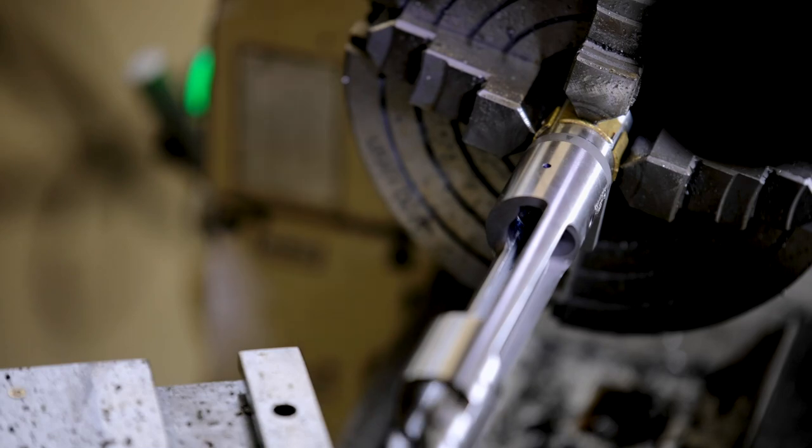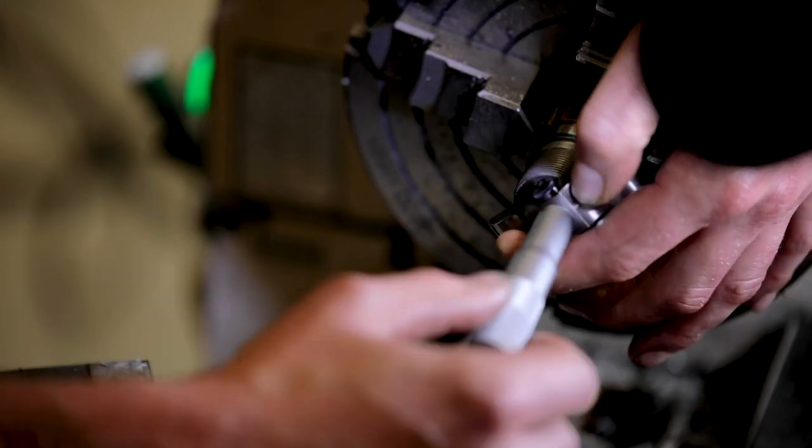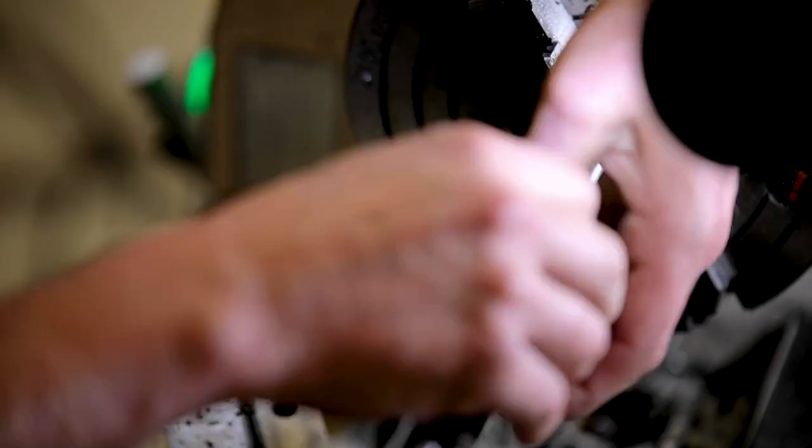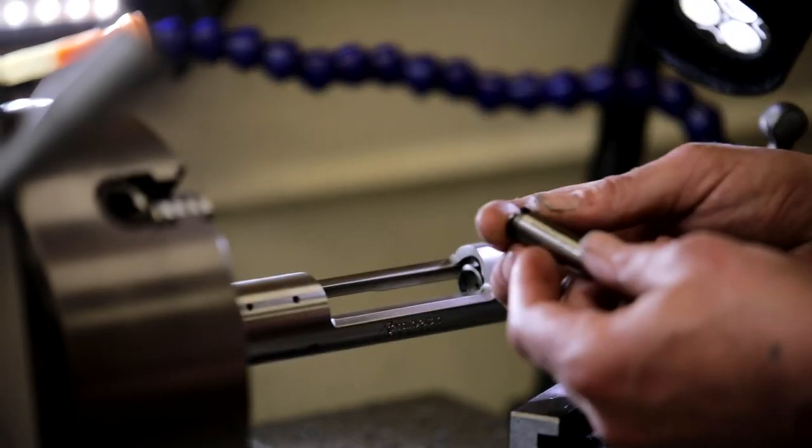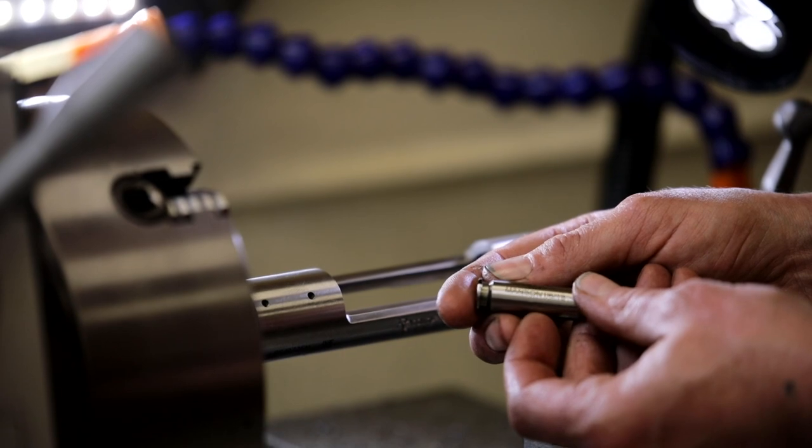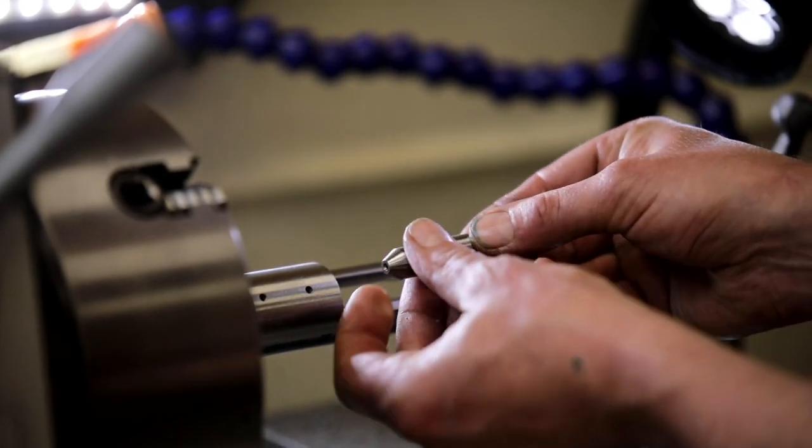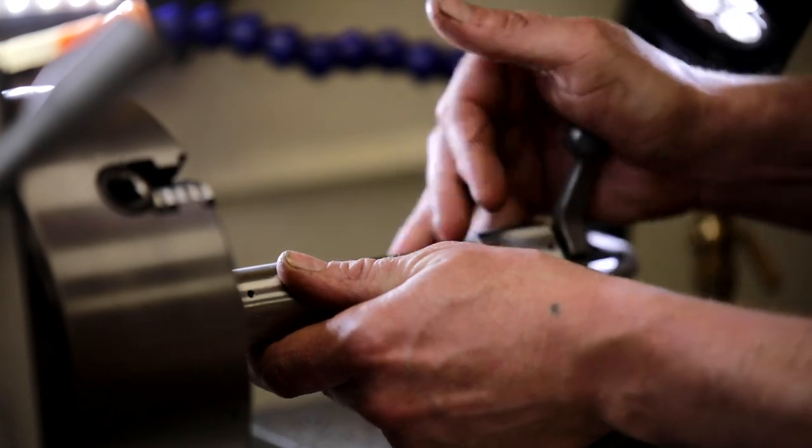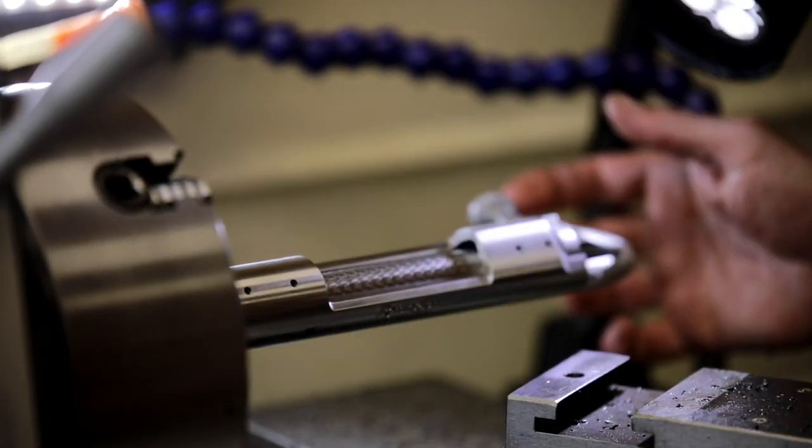Okay, so now that I've got my chambering reamer cut the chamber to depth, I'm going to do one last check with the go and no go gauges. What we're looking for here is for the bolt to close on the go gauge as if nothing were in the chamber. Get over the extractor, and there we go, that looks good.